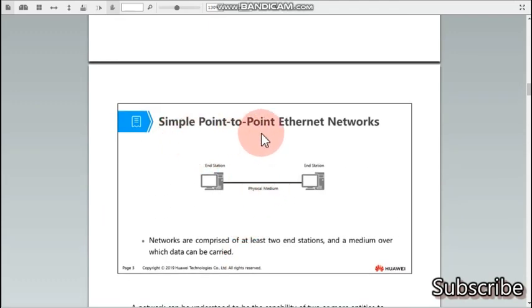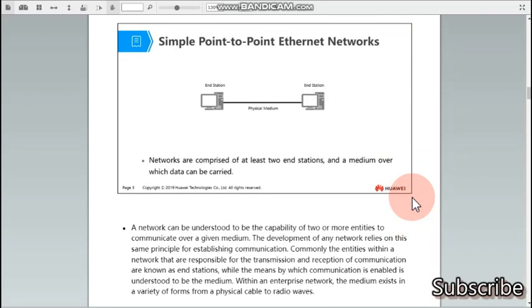First thing we will study is simple point-to-point Ethernet networks. A point-to-point Ethernet network has two end systems connected directly with the physical medium. These two end stations can be called points and this connection between them can be called point-to-point Ethernet network. A network can be understood to be the capability of two or more entities to communicate over a given medium. The development of any network relies on this same principle for establishing communication. Commonly, the entities within a network that are responsible for the transmission and reception of communication are known as end stations, while the means by which communication is enabled is understood to be the medium. With an enterprise network, the medium exists in a variety from a physical cable to radio waves.